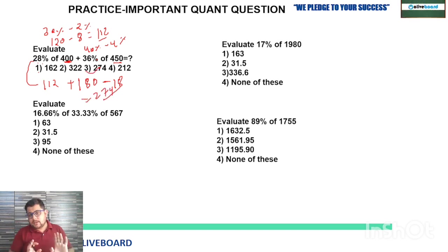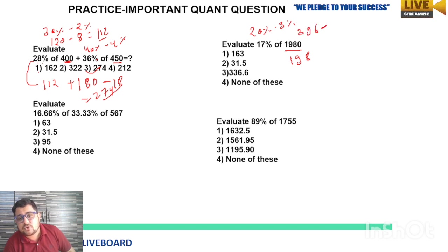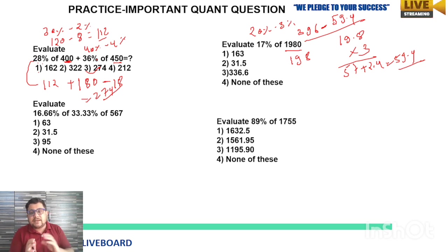Similarly, 17% of 1980. 17% you can write in 20% minus 3% form. 20%: 198 is 10%, double is 396, minus 3%. 1% is 19.8, multiply by 3: 19 times 3 is 57, 0.8 times 3 is 2.4, so 59.4. 396 minus 59.4: 396 minus 59 is 337, minus 0.4 is 336.6. Your answer is 336.6.